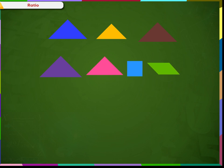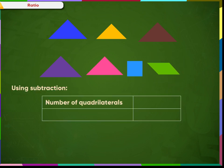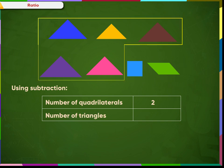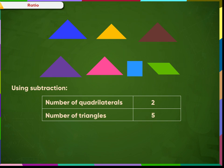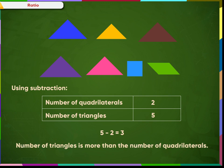We use subtraction to compare the quantities. The number of quadrilaterals is 2 and the number of triangles is 5. If we subtract the two quantities, we get 5 minus 2, that is 3. This means the number of triangles is more than the number of quadrilaterals by 3.